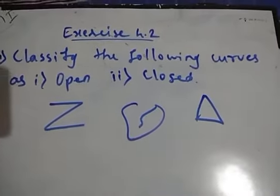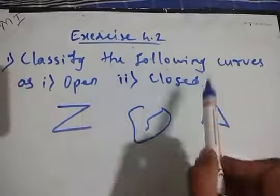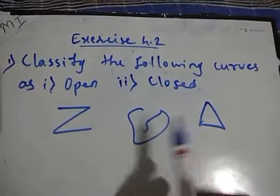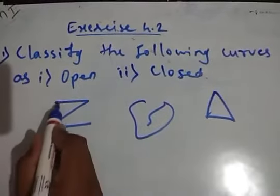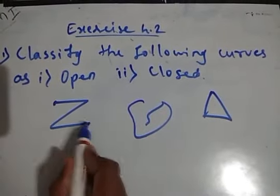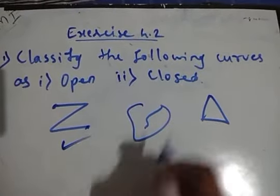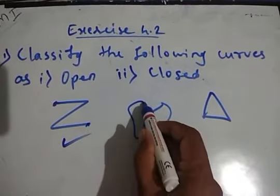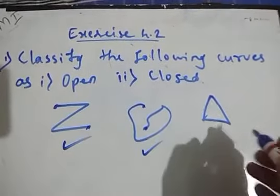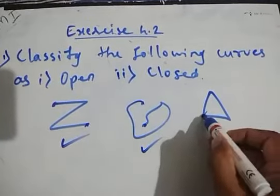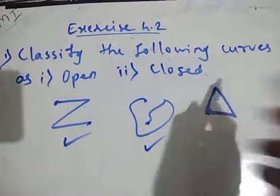Now let's start some examples. First example: classify the following curves as open and closed. The starting point and ending point of the first curve are different — this is an open curve. The starting and ending point of the second curve are also different — this is also an open curve. But for the third, the starting and ending point is the same — so this is a closed curve.